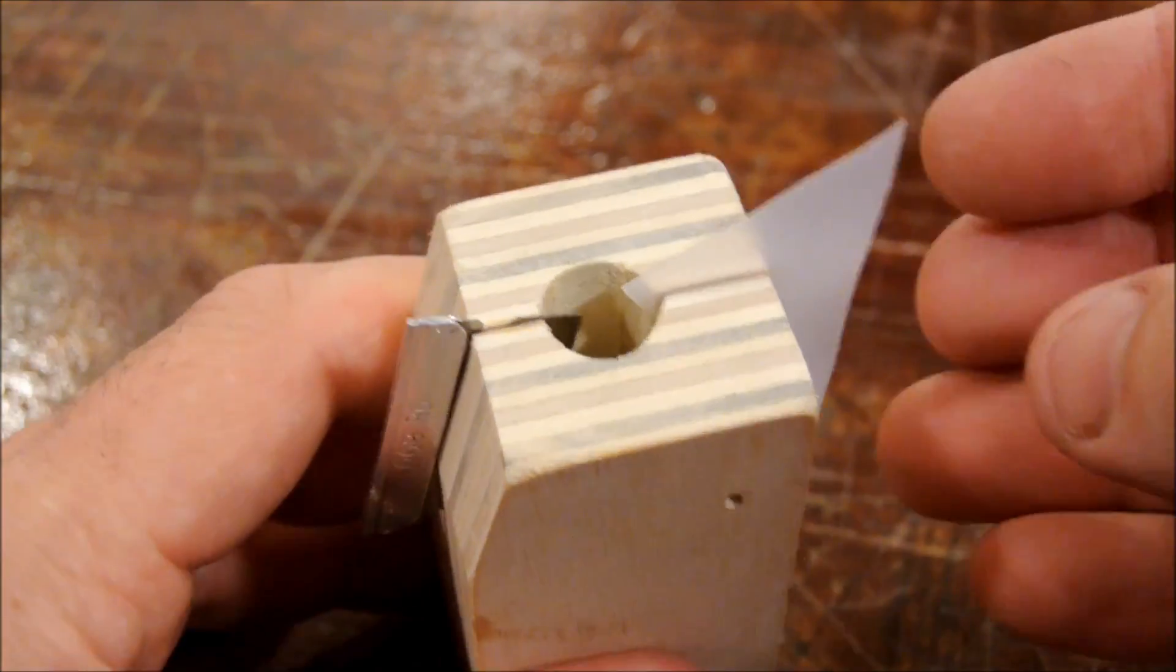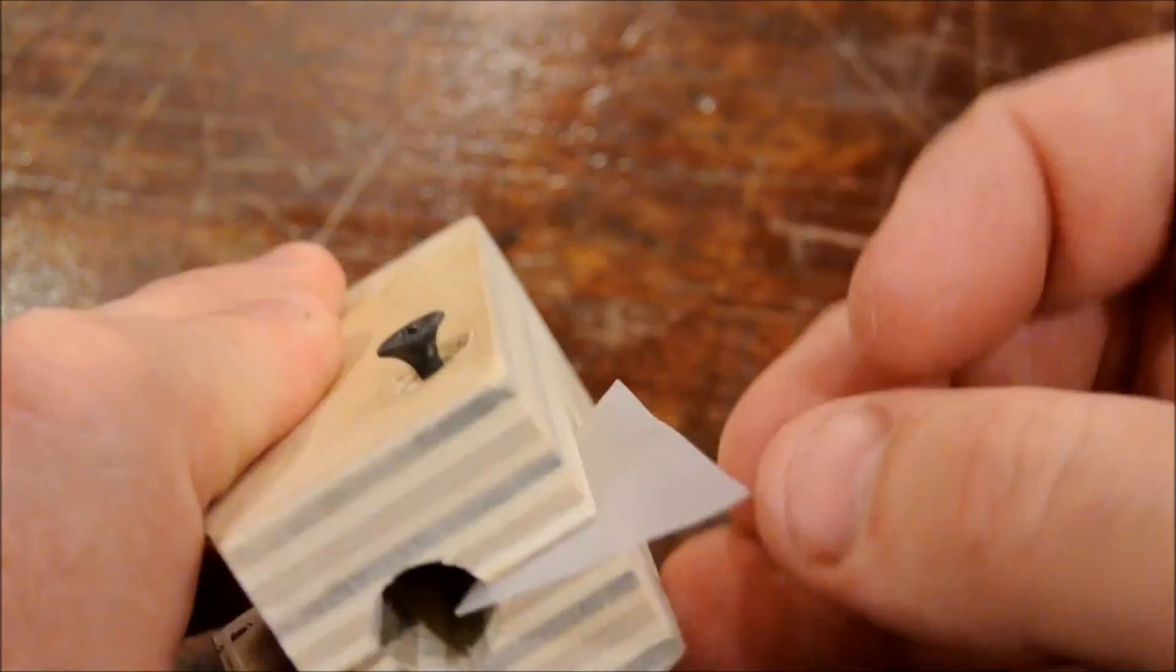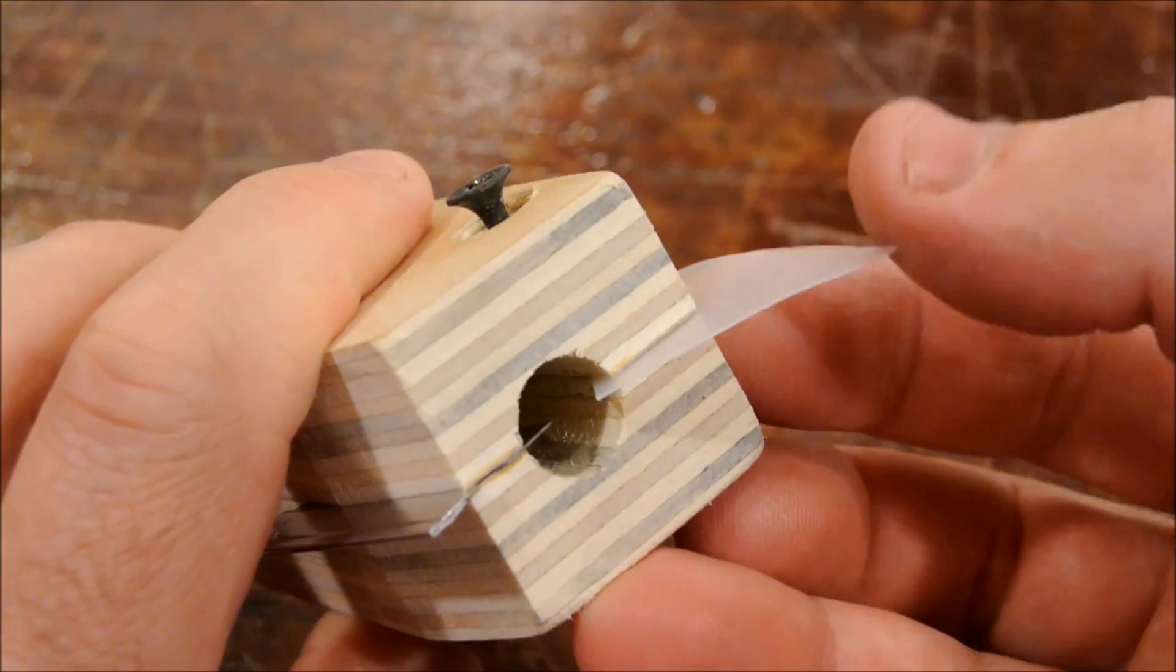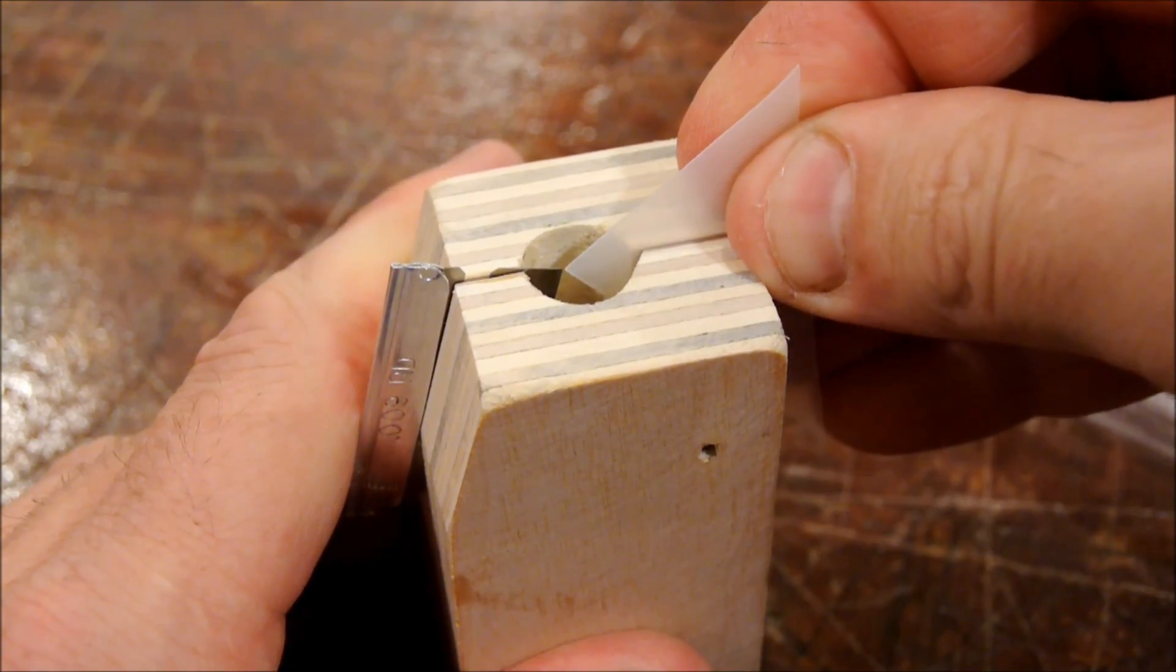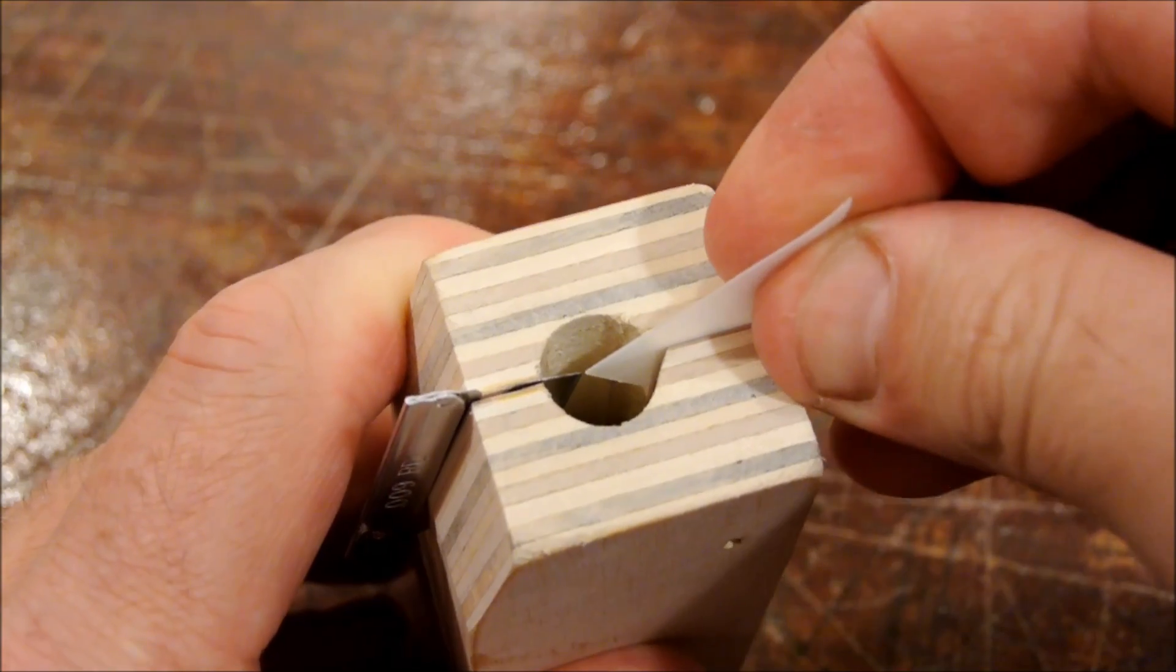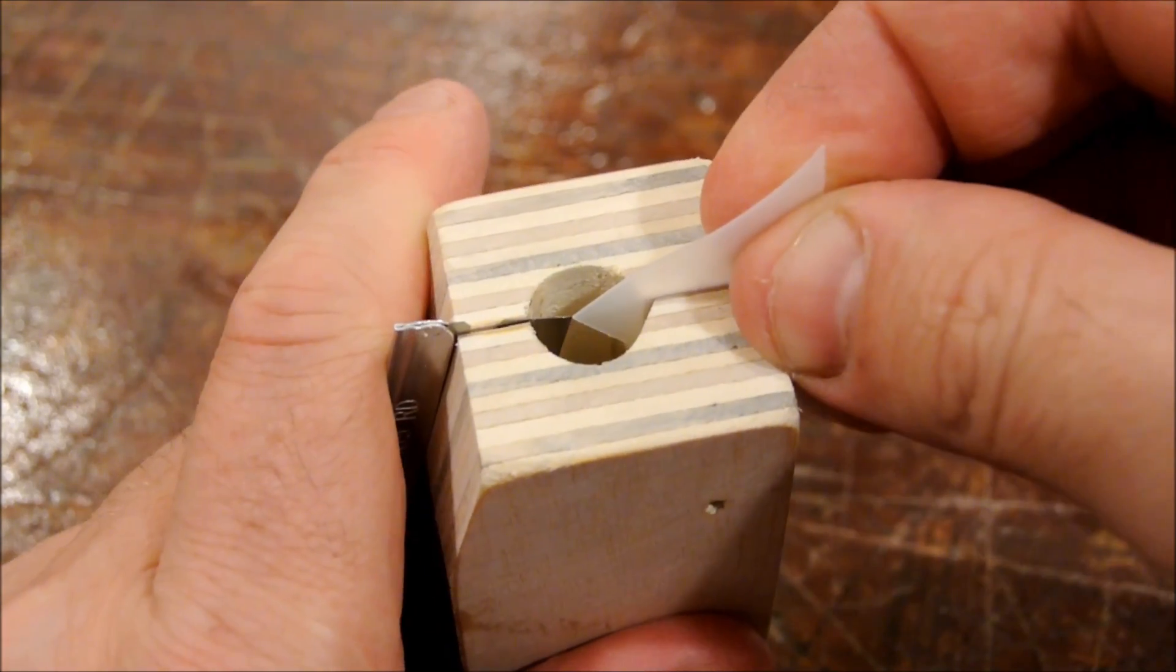Now for phase two, in order to split it in half we need to make a little fin and this is just from a piece of milk carton. We make the fin just touch the razor blade.